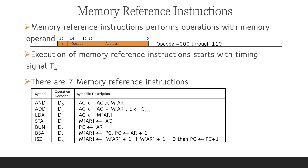Memory reference instructions perform operations involving memory locations. The instruction format structure consists of a 12-bit address field (bits 0–11), a 3-bit opcode field (bits 12–14), which represents a combination of different types of operations, and the last bit (bit 15) indicates direct or indirect addressing mode.